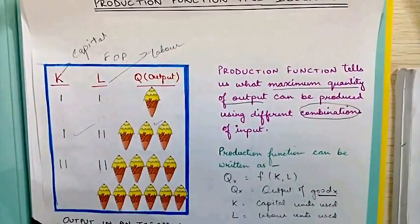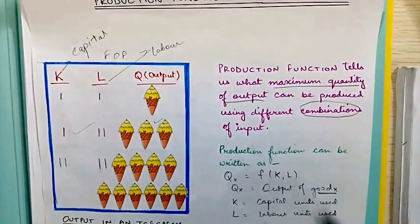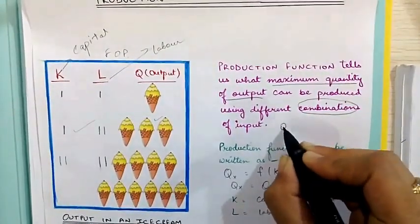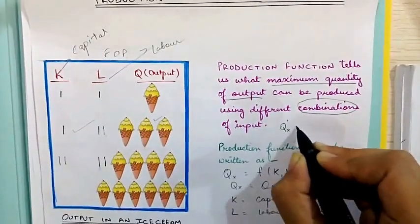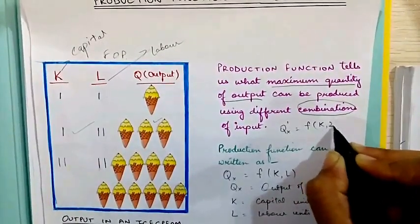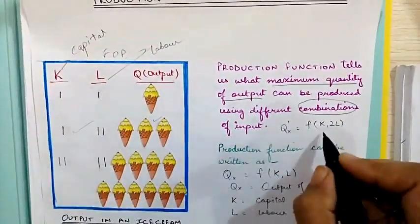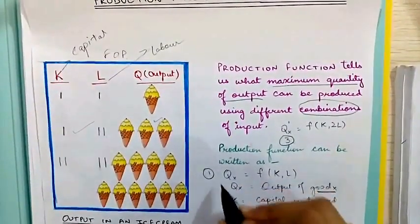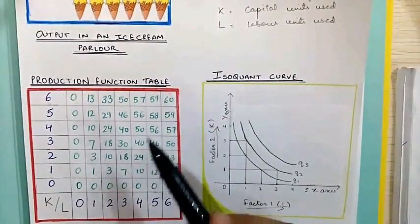Now suppose we make any changes in this production function, like we increase one unit of labor. We can write Q'x = f(K, 2L), where we are using two units of labor. In that case our Qx becomes 3, whereas previously with one unit each our Qx was 1.